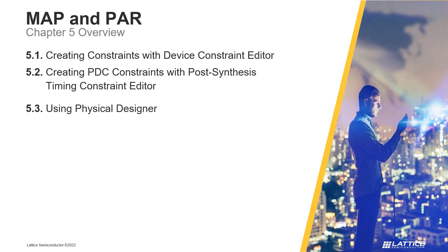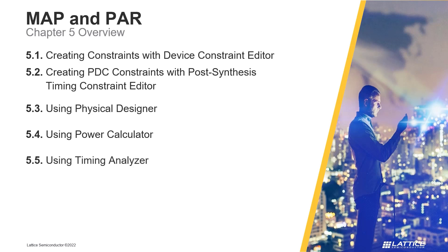In section 3 of chapter 5, Using Physical Designer, we will discuss Radiant's Physical Designer and what it can be used for. In the fourth section, Using Power Calculator, we will discuss Radiant's Power Calculator Tool and how it can be used to calculate the static and dynamic power consumption of a design. In the fifth section, Using Timing Analyzer, we will discuss Radiant's Timing Analyzer Tool and how it can be used to check a design's timing performance after place and route. In section 6, Using Run Manager, the Run Manager Tool will be introduced, as well as how it can be used to run the project flow for multiple implementations in a project.